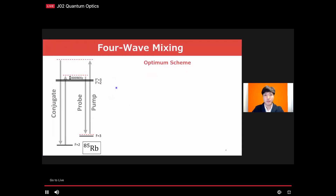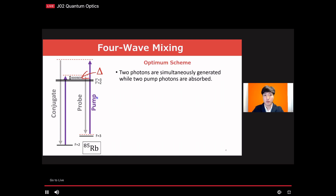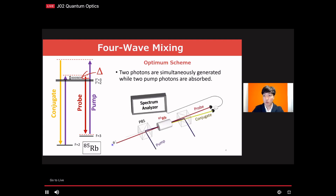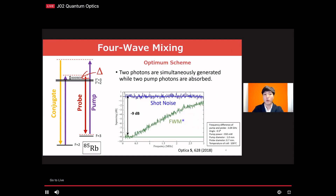The typical four-wave mixing process is shown here. We use the double-lambda configuration, and we found the optimum four-wave mixing about 800 MHz away from the D1 line of rubidium-85. In this process, two pump photons are absorbed while two photons — the probe and conjugate — are simultaneously generated. Experimentally, we send a strong pump beam into the rubidium cell, and then stimulate the process by seeding a small probe beam. The probe is amplified during the process while the conjugate is generated. Due to their simultaneous generation, when we measure the intensity difference of the probe and conjugate, we find that the intensity noise is reduced below the shot noise limit. In our lab, we can generate about 9 dB of squeezing when we are off-resonant with the rubidium transition.